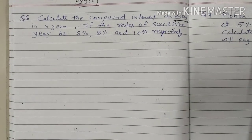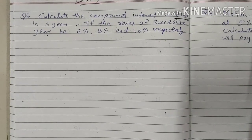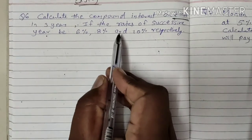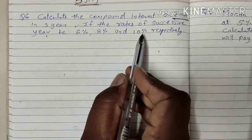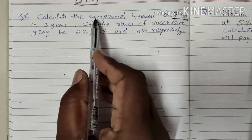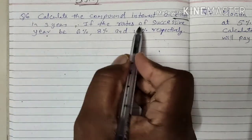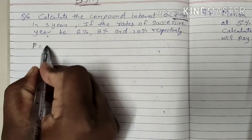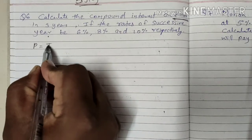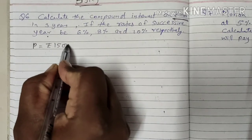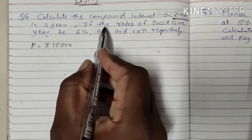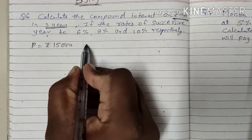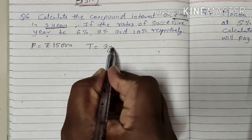Here there are 3 different rates of interest, so one by one we will calculate the interest and also the amount for each year. First of all, the principal we have to take is Rs. 15,000. The total number of years is 3 years.